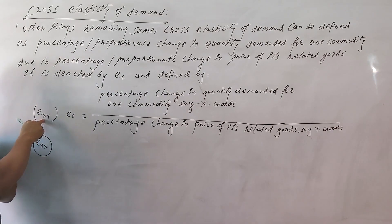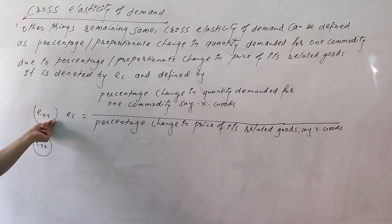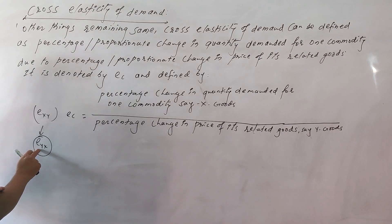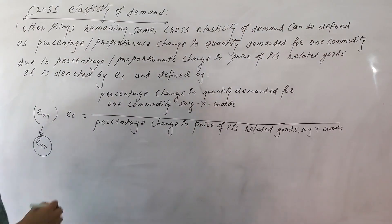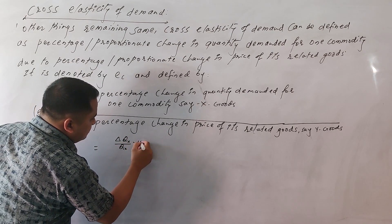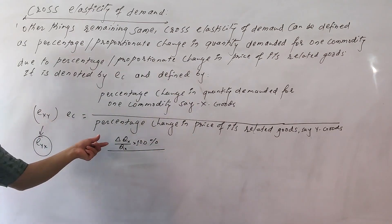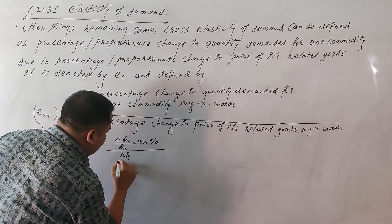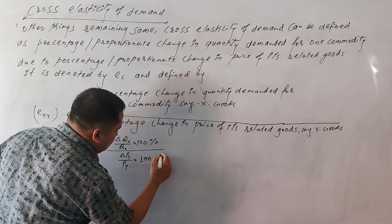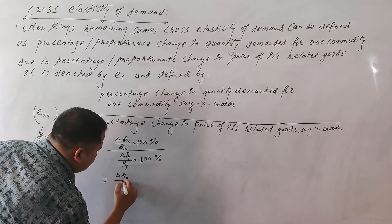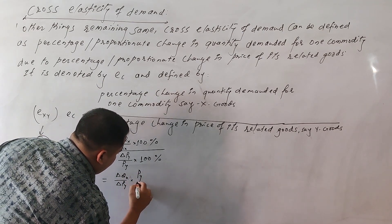EXY measures the changing rate of quantity demanded for X commodity due to a percentage unit change in the price of Y commodity. The percentage change in quantity demanded for X commodity is: change in QX divided by initial QX, multiplied by 100. The percentage change in price of Y commodity is: change in PY divided by initial PY, multiplied by 100.